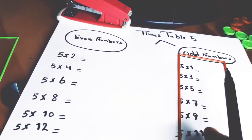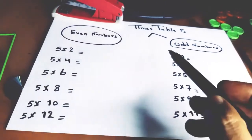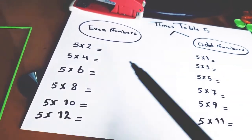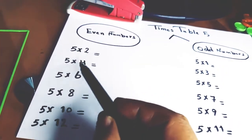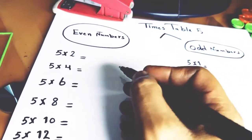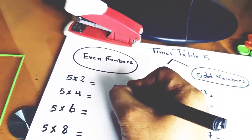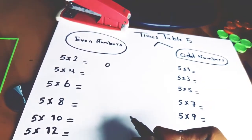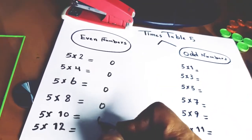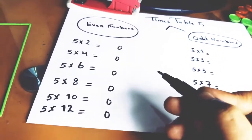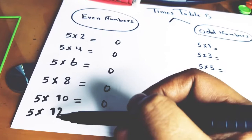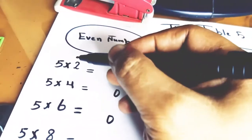To memorize the times table of 5 easily and quickly, we must divide it into even numbers and odd numbers. When we multiply 5 by any even number, we must place 0 at the one's digit, like this: 0, 0, 0, 0, 0 — because we are multiplying 5 by even numbers.